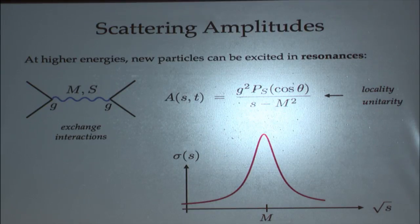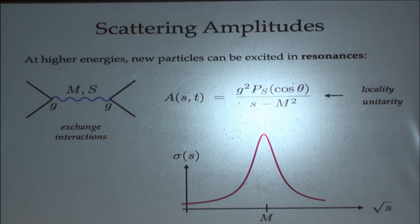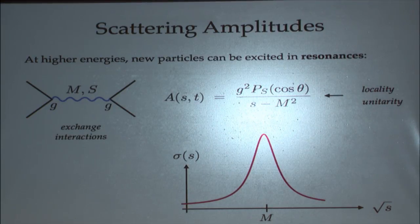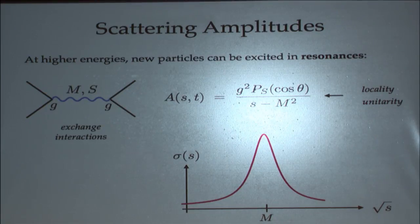Near the pole, the 2-to-2 scattering amplitude factorizes into a product of three-particle amplitudes. If you sum over all of the helicities in the case where you can have an exchange of a particle with mass M and spin S, summing over all of the helicities gives you a very specific angular dependence given by the Legendre polynomial of order equal to the spin of the particle. The coefficient of that Legendre polynomial has to be a positive number by unitarity. This follows not just from Feynman diagrams but on the basis of symmetries and the allowed type of singularity.